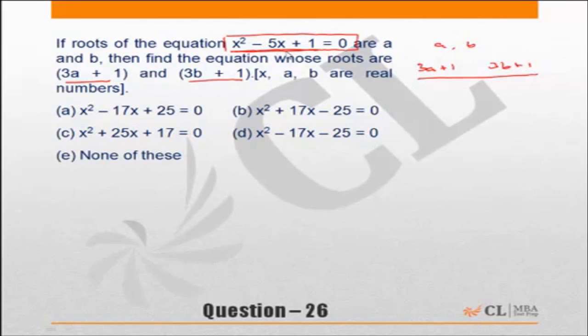For example, in this particular question, if you check the discriminant d which is b square minus 4ac, you see d will be 5 square is 25, 25 minus 4 which is equal to under root 21. So you are not getting numbers which are convenient.